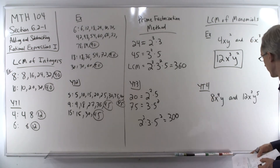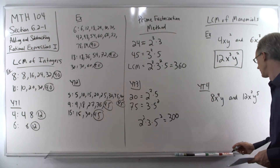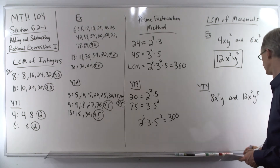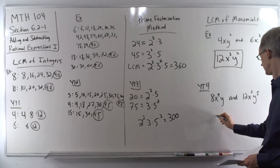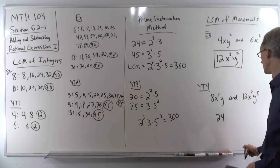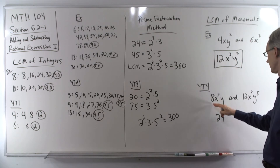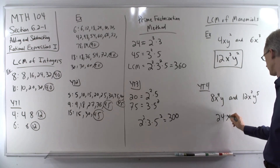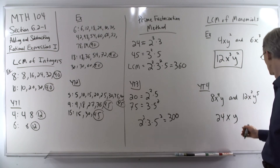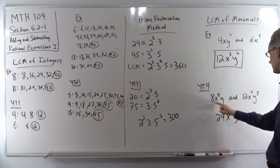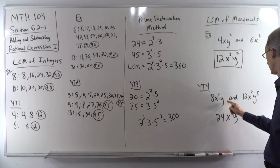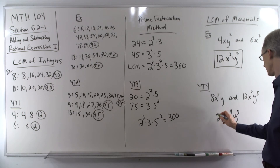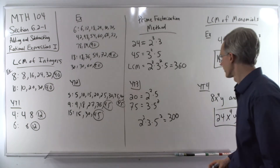Your turn number 4. The LCM of 8 and 12 is 24. We have 2 variables. The largest exponent on x is 4. The largest exponent on y is 5. So the answer is 24x⁴y⁵.